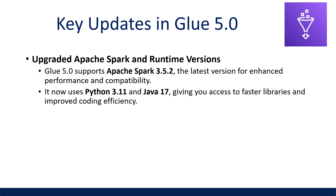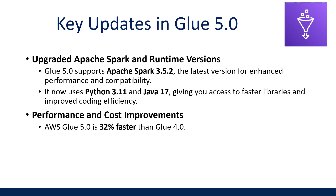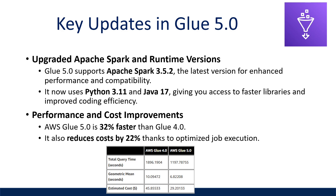Performance and cost improvements: AWS Glue 5.0 is reported to be 32% faster than Glue 4.0 and reduces costs by 22% thanks to optimized job execution and improved Apache Spark 3.5.2 performance. The improved runtime environment with Python 3.11 and Java 17 also reduces overhead, making the ETL process more efficient and resource effective.